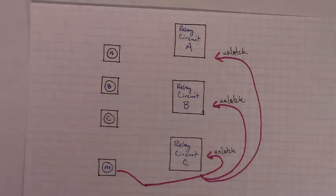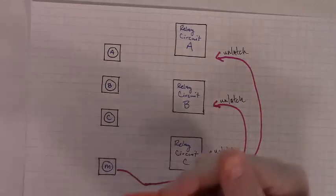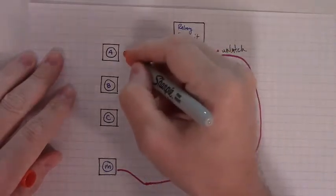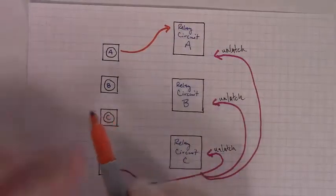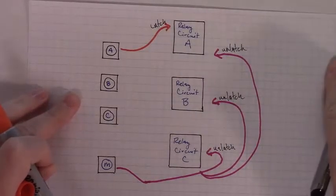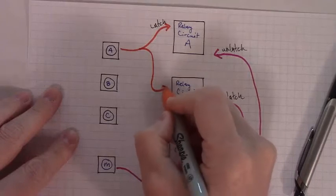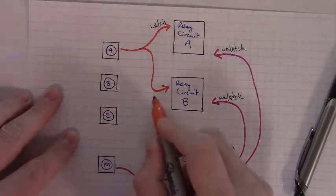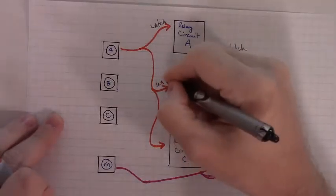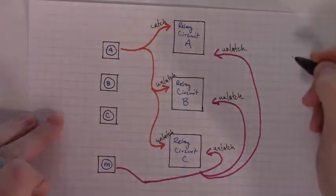Then, we have the more complicated scenario up at the top with these three buttons. What is it that we want each of those buttons to do? Well, first off, when we push button A, we want it to latch on relay circuit A. A single push should latch on relay circuit A. We know we want that. That will be a latch event. Then, we also want it at the same time to that single push to unlatch relay circuit B as well as unlatch relay circuit C. We want this to be an unlatch. And we want this to be an unlatch to turn them off if they happen to be on.